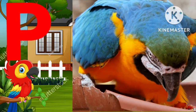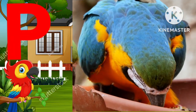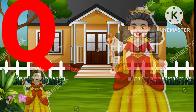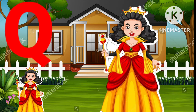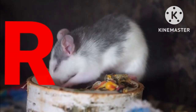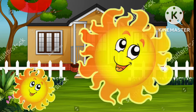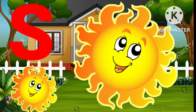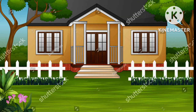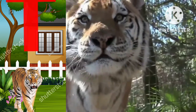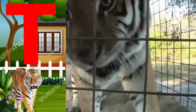P for parrot, Q for queen, R for rabbit, S for sun, T for tiger.